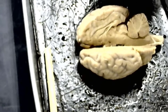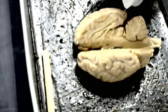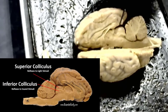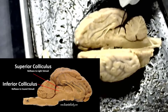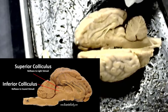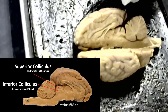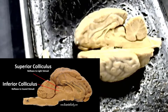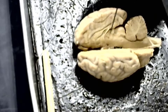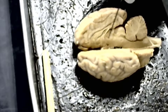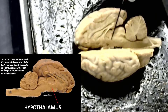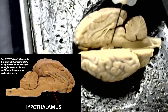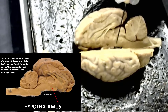Just behind the pineal body is the superior colliculus — the superior colliculus orients your head and neck to bright light as a reflex. The inferior colliculus orients your head and neck to sound as a reflex, so you can respond to danger quickly. The thalamus is a relay center for sensory information, and the hypothalamus — 'hypo' meaning under — is located beneath the thalamus.